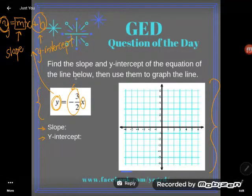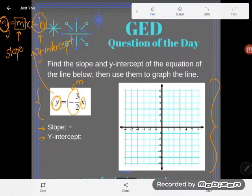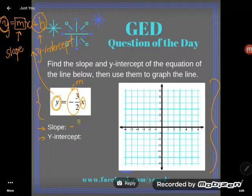Since this is a multiplier, that means this is the m, my slope. So my slope is negative 3 halves.